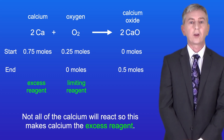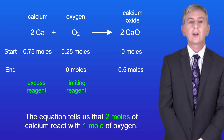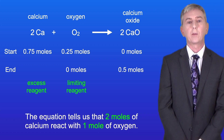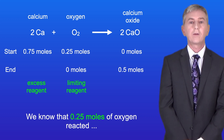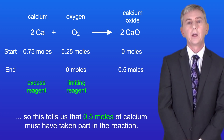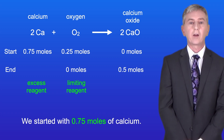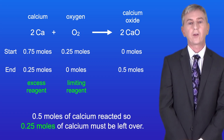Not all of the calcium will react, so this makes calcium the excess reagent. We can calculate how much calcium is left over by looking at the chemical equation. The equation tells us that 2 moles of calcium react with 1 mole of oxygen. We know that 0.25 moles of oxygen reacted, so 0.5 moles of calcium must have taken part in the reaction. We started with 0.75 moles of calcium, and since 0.5 moles reacted, 0.25 moles of calcium must be left over.